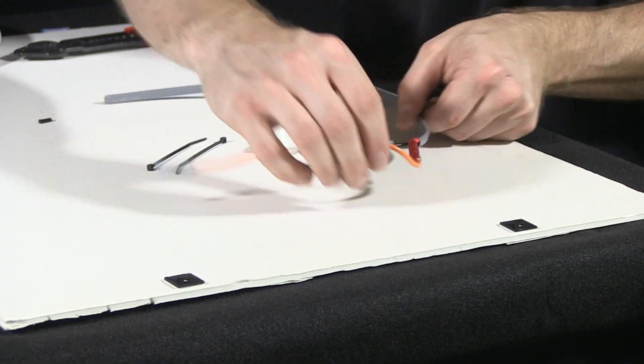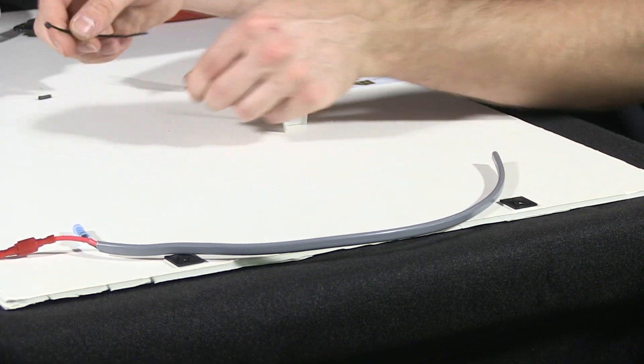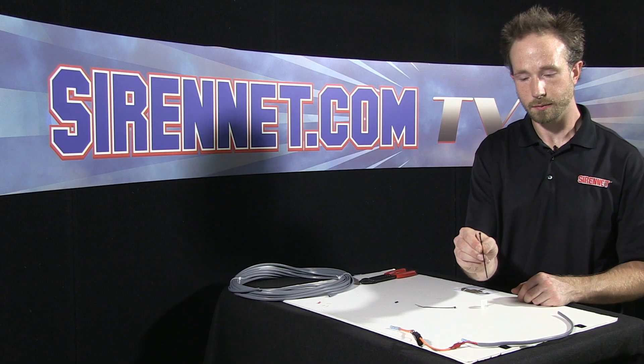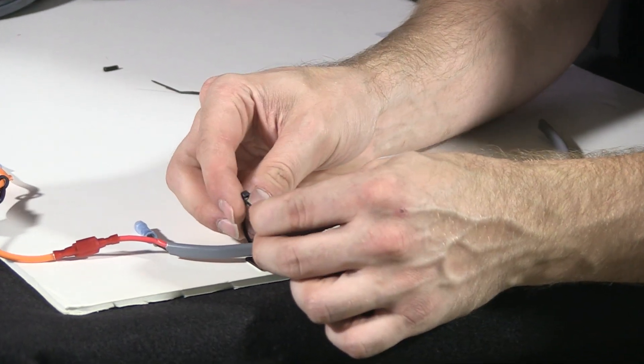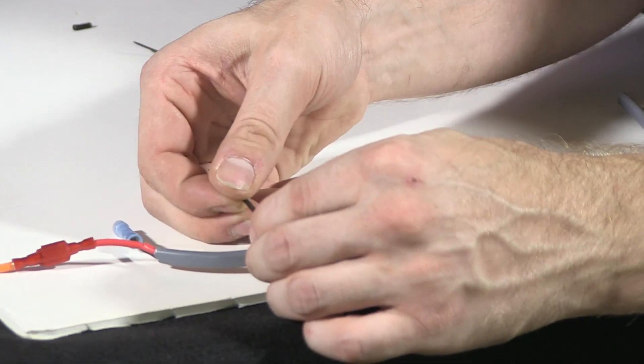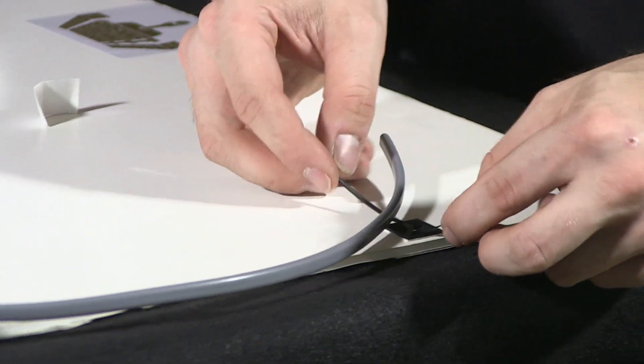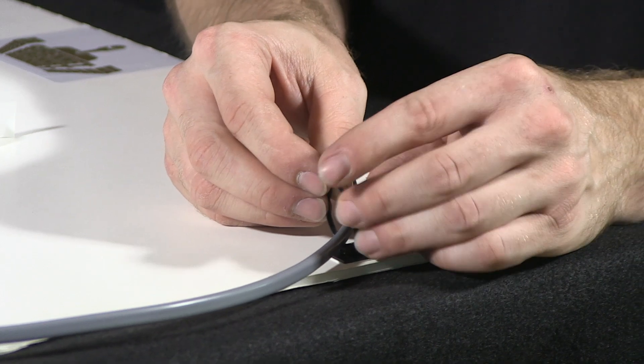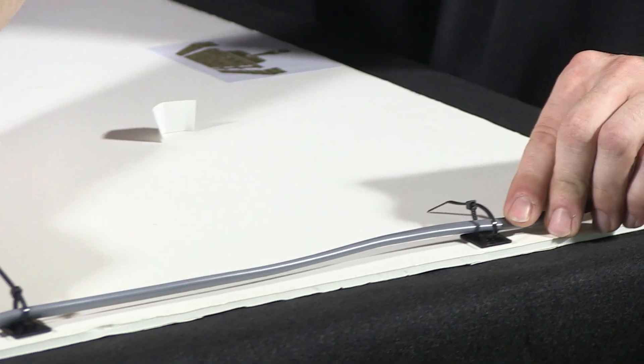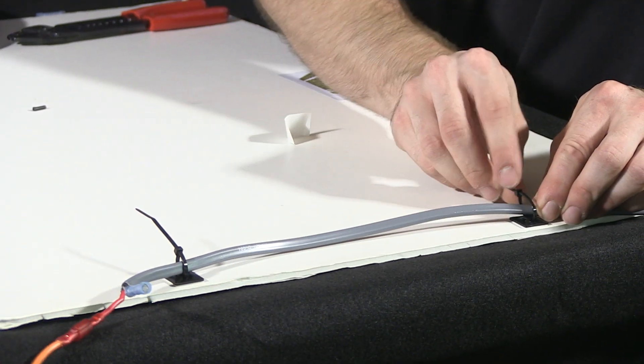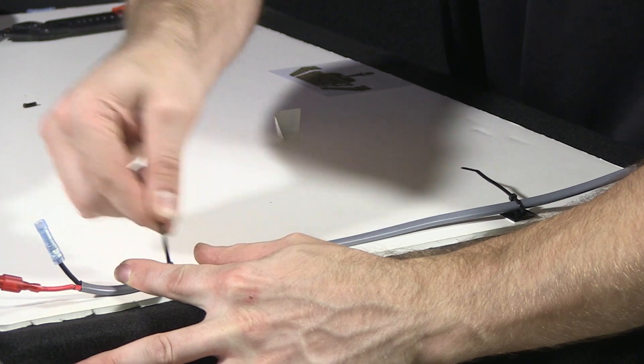Now with the wiring harness we have points where we can secure it firmly. We'll take the zip tie and slide it through the holder, same thing with the other zip tie and holder. Pull the harness so it's nice and taut, then lock this zip tie and this zip tie.